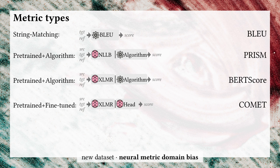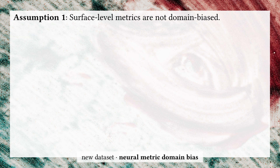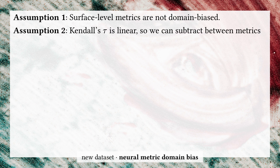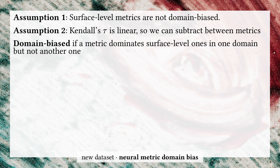This needs some setup. We cannot directly compare performance across domains because a plethora of things could influence the performance. We first assume that surface-level metrics are not domain biased because there are no learned parameters to be biased in the first place. We also assume that the way we measure metric quality — correlation with humans — is linear with their objective quality. This allows us to subtract and compare scores within a domain between metrics. Finally, we claim that if a metric dominates the surface-level metric in general but not in the biomedical domain, it is likely biased.